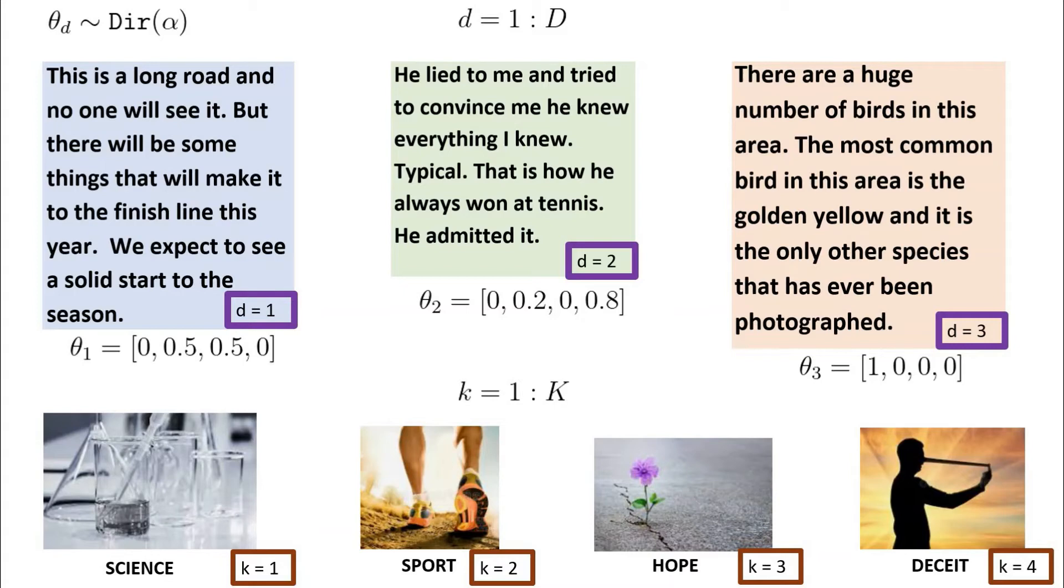The LDA approach makes the assumption that each word in each document belongs to a specific topic. To model this idea, we say that each topic k has its own distribution over the entire vocabulary of words.